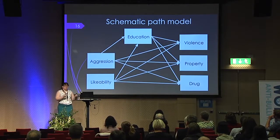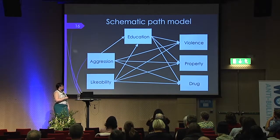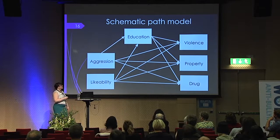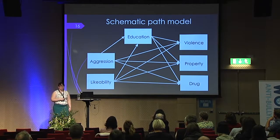This was my schematic PATH model. On the left we have aggression and likability, both predicting education, and both also directly predicting violence, property, and drug charges. Education is also directly predicting violence, property, and drug charges.